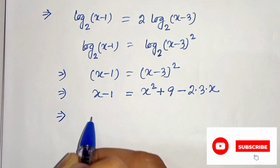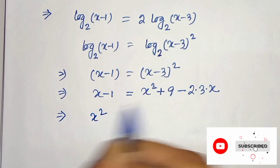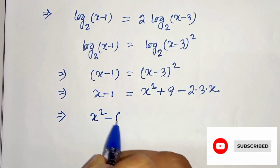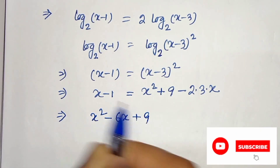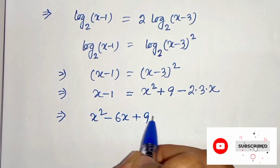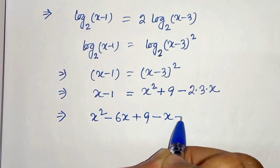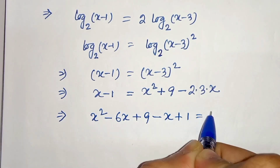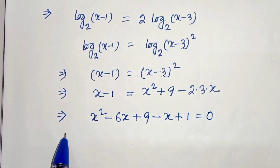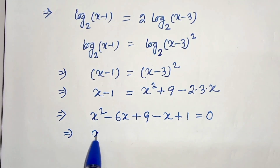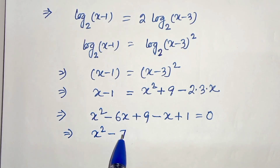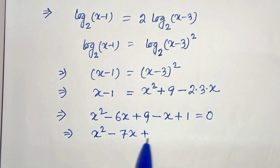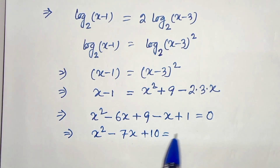So we can write x squared minus 6x plus 9 minus x plus 1 equals 0, which simplifies to x squared minus 7x plus 10 equals 0.